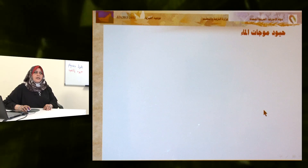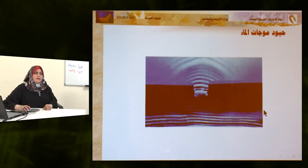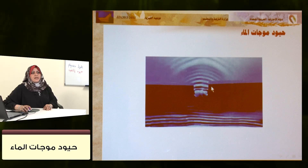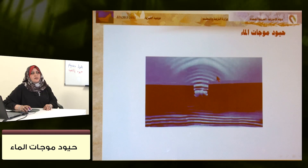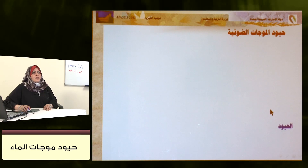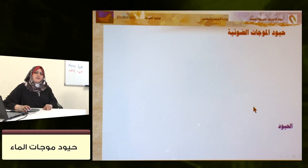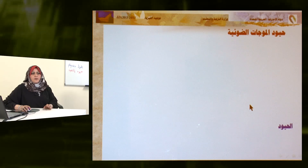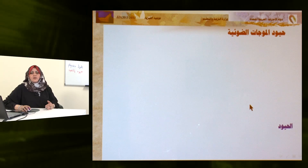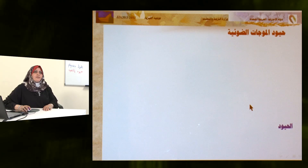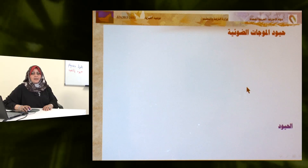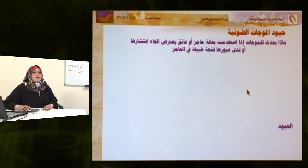سنوضح الآن ظاهرة طبيعية لحيود الموجات المائية: موجة ماء تمر عبر عائق تحيد عن مصارها وتأخذ مساراً منحنياً. حيود الموجات الضوئية مشابه لذلك؛ عند مرورها بعائق أو اختراقها حاجز تحيد عن مصارها وتأخذ مساراً دائرياً. هل يمكن أن تحيد الموجات الضوئية كما تحيد الموجات المائية؟